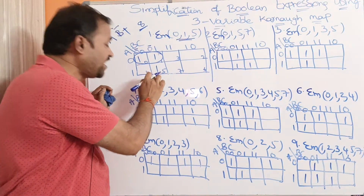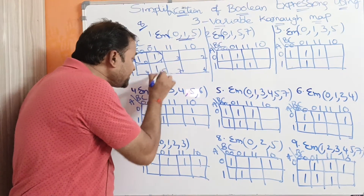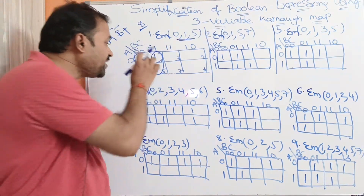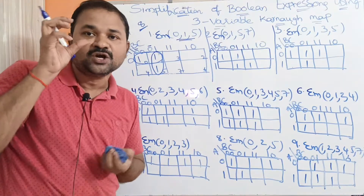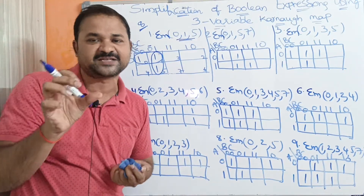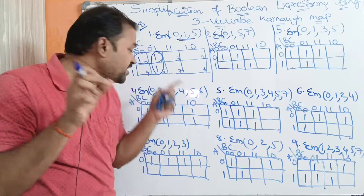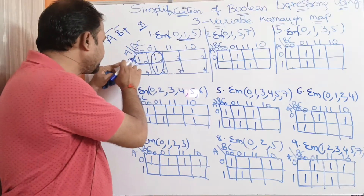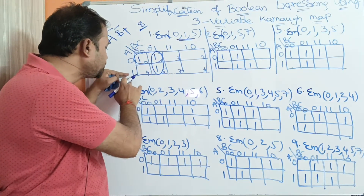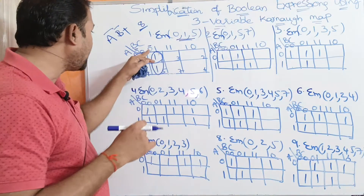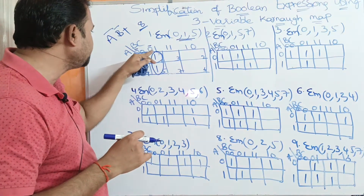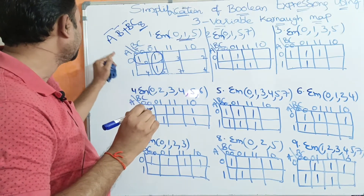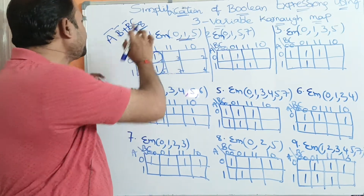Next, we need to cover minterm 5. It is better to group minterms 1 and 5 as a pair rather than leaving minterm 5 alone, because a group of 2 yields fewer variables than a group of 1. A is changing from 0 to 1, so we neglect A. The column value is 01, meaning B-bar C. So the minimal expression for problem 1 is A-bar B-bar + B-bar C.